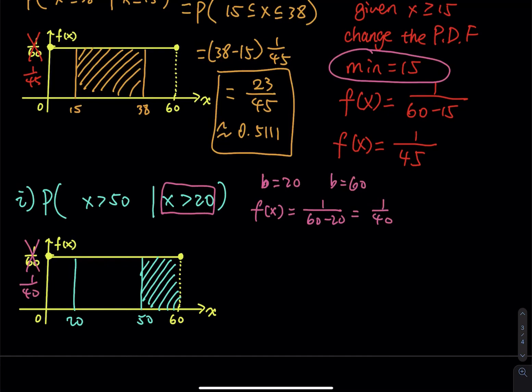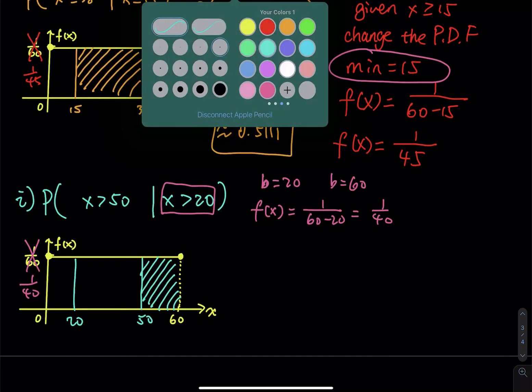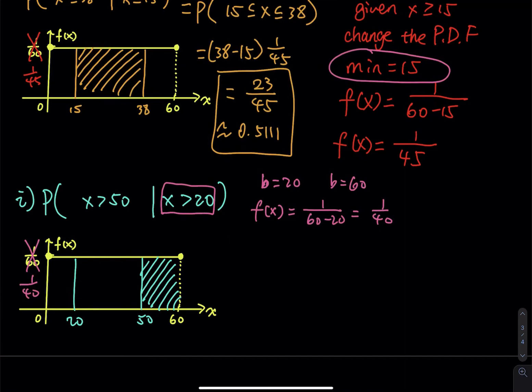And then the math is we are looking for probability that X is between 50 and 60. So that means we are doing 60 minus 50. 50, not 15. 50 and then times the PDF, 1 over 40. So that is 10 divided by 40. So 1 fourth is 0.25. So that's how you answer this conditional probability problem.